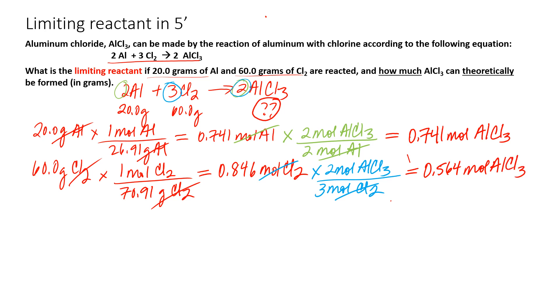So what I would call the golden rule of the limiting reagent problem is that whichever reactant produces the lesser amount of product is the limiting reagent. So our 60 grams of Cl2 will produce 0.564 moles of AlCl3. After that, Cl2 is run out. We can't make any more product.